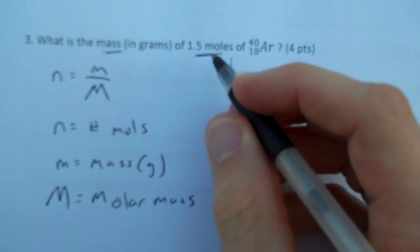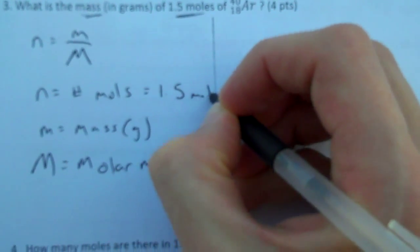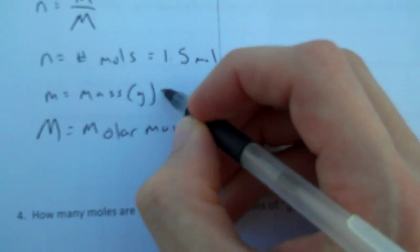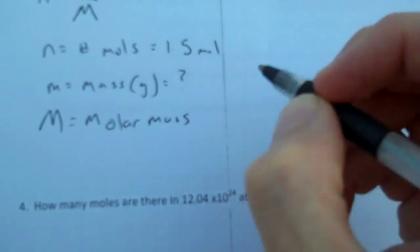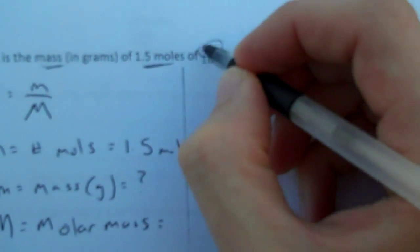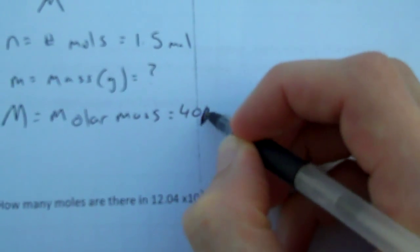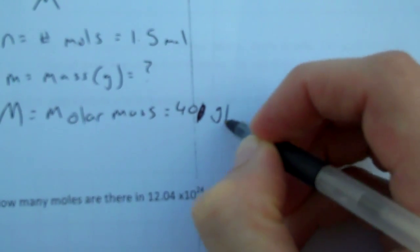Now, this question gives me the number of moles. So the number of moles, n, equals 1.5 mole. The mass is what I'm asked for, so that's my question mark. And my molar mass is taken from the mass number 40, and the unit is 40 grams per mole.